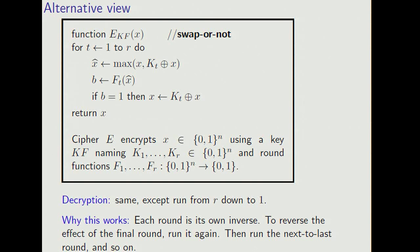Now apply ft to x hat, giving a bit b. That's the coin flip. If b equals 1, then we replace x by kt x or x. And we do this for r rounds.